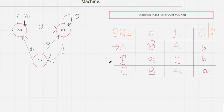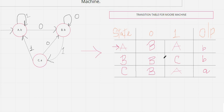The transition table is now clear. This is the process you need to follow: from the state transition diagram, convert it to a state transition table; from that table draw the diagram for the Mealy machine; and then finally draw the state transition table for the Mealy machine. Now looking at this table, we can draw the states.